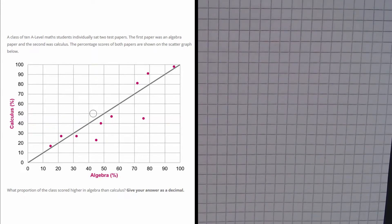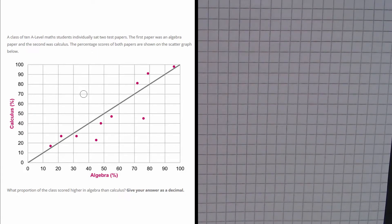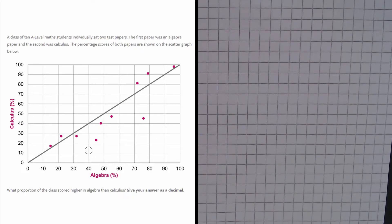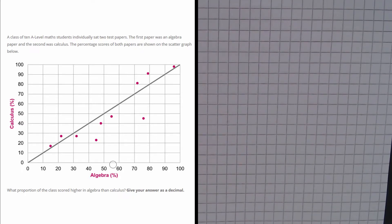Now this is useful because it tells us that anything above the line has done better in Calculus, and any of the dots below the line have done better in Algebra.